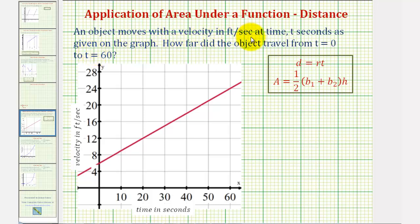An object moves with a velocity in feet per second at time t seconds as given by the graph. How far did the object travel from t equals zero to t equals sixty seconds?